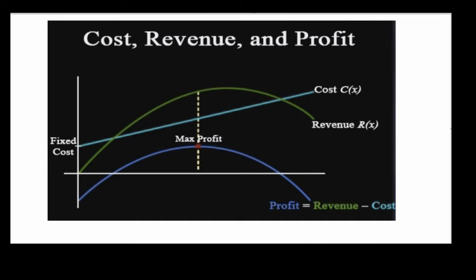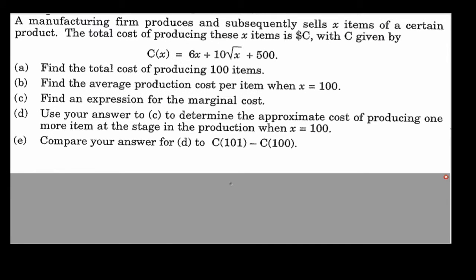To find maximum profit using calculus: the maximum occurs when the slope of the profit function equals zero. In other words, we want the derivative of the revenue function minus the derivative of the cost function to equal zero — that is, R'(x) = C'(x). That's the calculus condition for maximum profit.